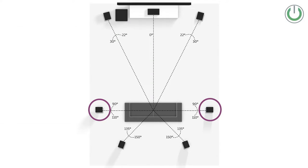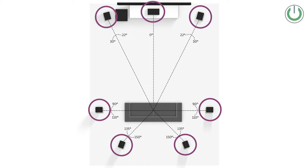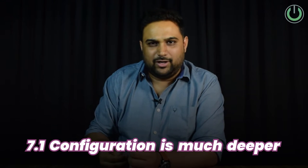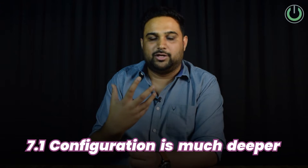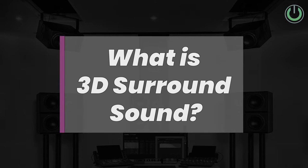In 7.1 you get side surrounds and back surrounds — two sides, two backs, and three fronts. These speakers at your listening level are seven, and with one subwoofer it becomes a 7.1 system. So a 7.1 is definitely going to be a deeper experience than a 5.1. Now, this is all about 2D surround sound — so what is 3D surround sound?